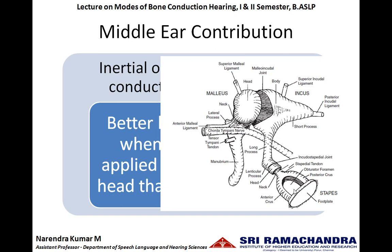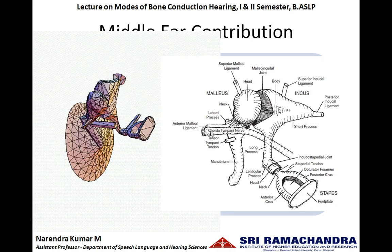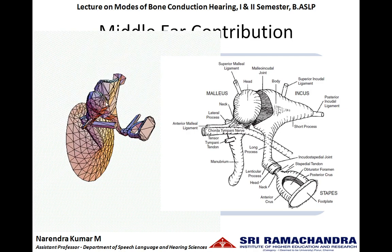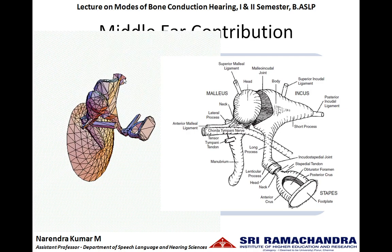There is no direct contact of the ossicular chain with any part of the temporal bone. The ossicular chain is suspended in the middle ear cavity, free to move, with the help of the anterior malleus ligament, superior malleus ligament, superior incudal ligament, and posterior incudal ligament. The ossicular chain vibrates along its own axis, so whenever the tympanic membrane vibrates, the ossicular chain vibrates lateral to medial along this axis.